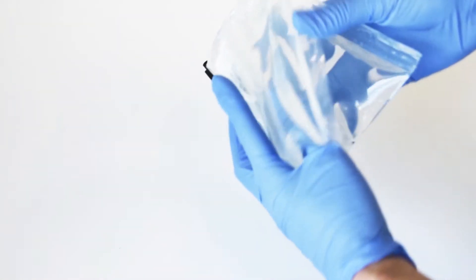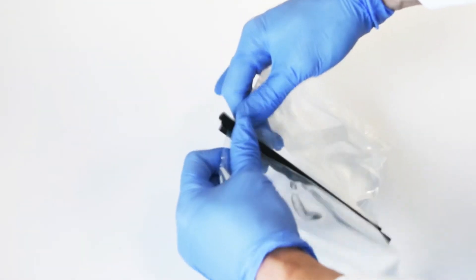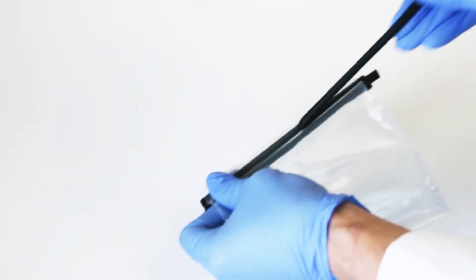To begin the mixing process, remove the pack from its packaging. Gently pull apart the pack so that the clip pops open. This allows the two parts of the resin pack to combine.